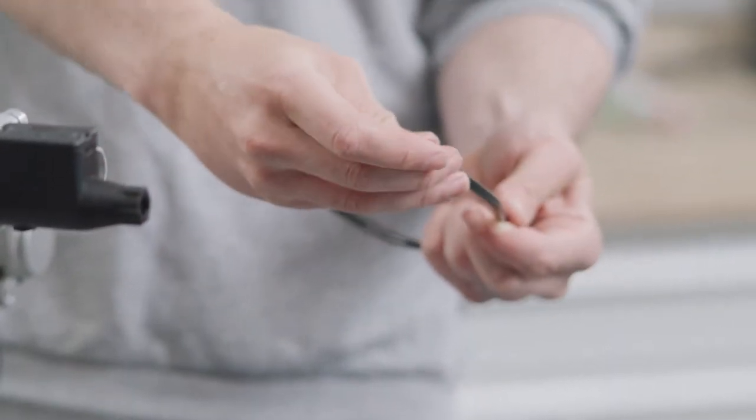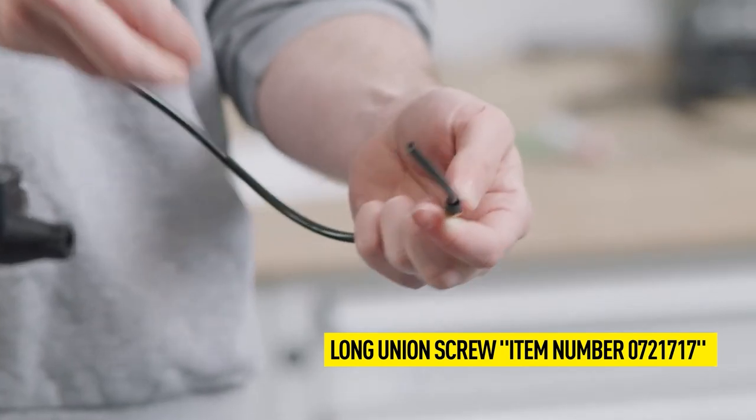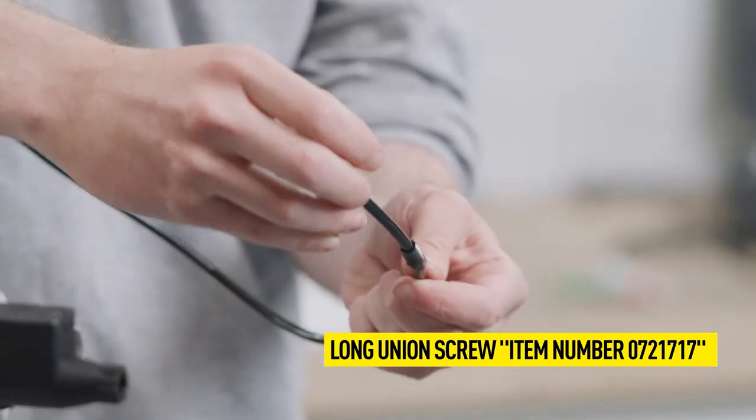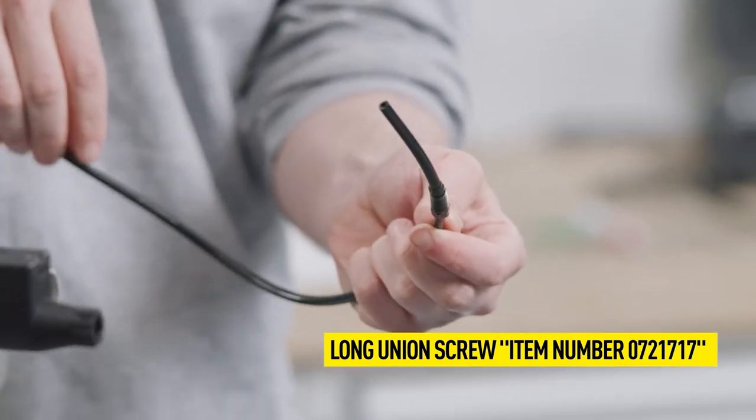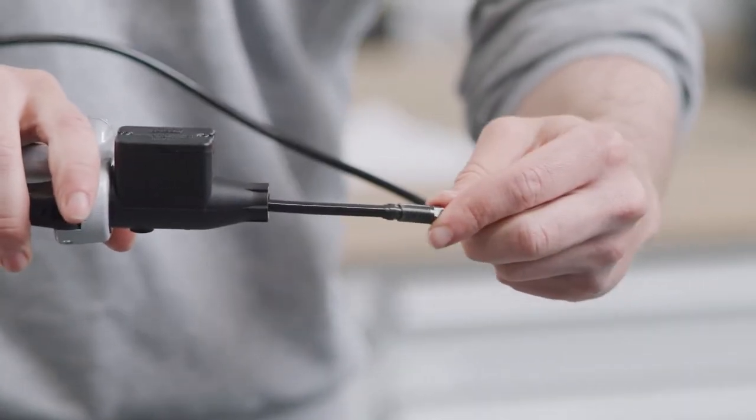Push the black M8 union screw with fine pitch thread and the clamping ring onto the brake line. Note that the union screw must be longer than the one used with HS rim brakes.